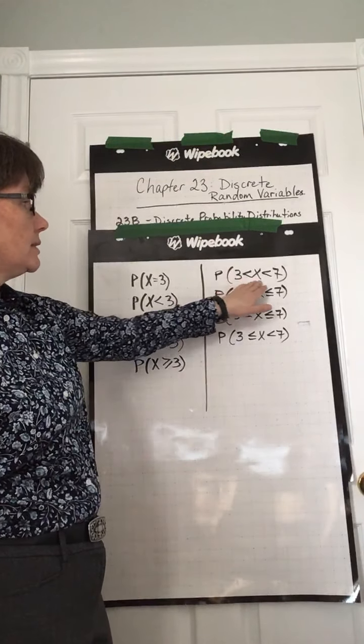So just be careful about your less than or equals. Here, we're looking for 3 less than x less than or equal to 7. So we're looking for 4, 5, 6, 7. Here, we're looking for 3 less than or equal to x less than 7. So we're looking for 3, 4, 5, 6. So just be careful about what the question is actually asking. Be careful about your notation. Your next video will be Example 2.